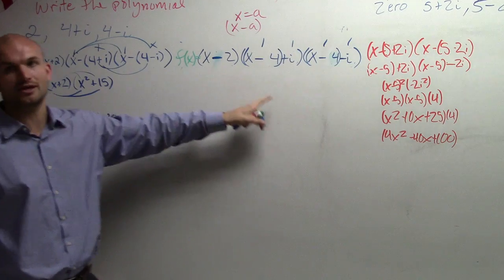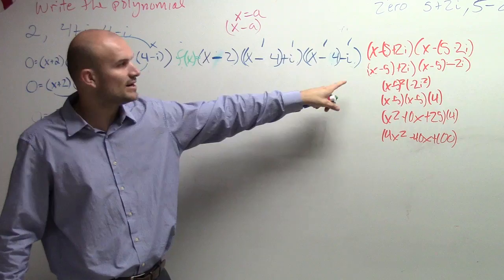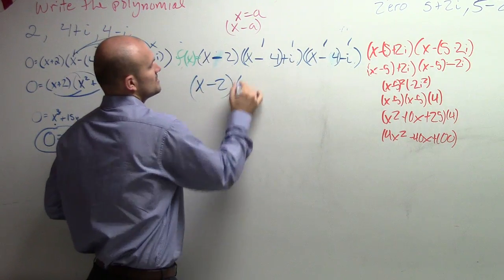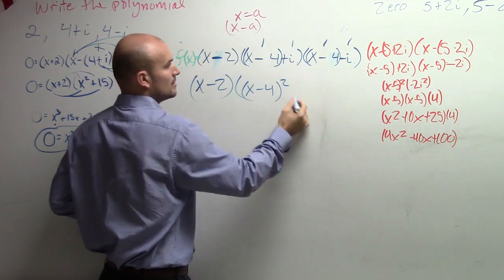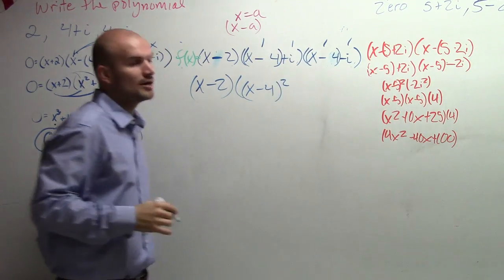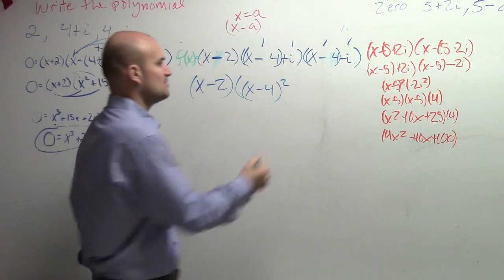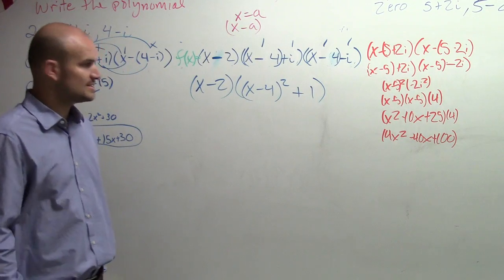So what you did with the shortcut was without having the difference of two squares. So I rewrite my parentheses. Now I have a difference of two squares. So I have x minus 2 times x minus 4 squared plus i times negative i is negative i squared. i squared is negative 1, so it's going to be plus 1. Right? Does everybody see this?